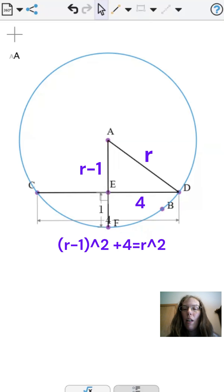The hypotenuse is r, the radius. We square each of these, subtract r squared on both sides of the equation, and solve for r.